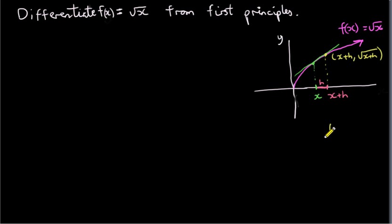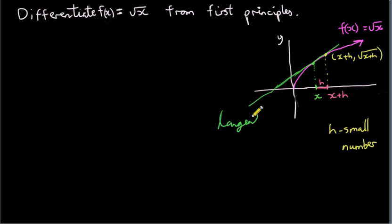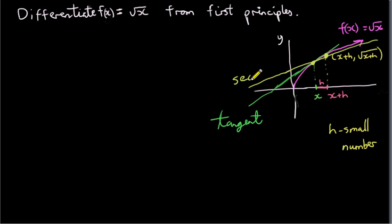h is a small number. So rather than getting the slope of our tangent, which is the green line — this line here is our tangent at x — what we do is we get the slope of a line that's close to the tangent. We get the slope of the line passing through the point we're interested in at x and this second point. So it's not touching at one point. This yellow line is crossing the curve at two points, so the slope of this yellow line is an approximation for the slope of our tangent. The yellow line, by the way, is sometimes called a secant.